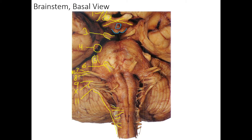Where is cranial nerve twelve? Cranial nerve twelve actually comes out between the pyramids and the olive — and you can see cranial nerve twelve right there. Here we have the pyramids, and lateral to that is the olive. The pyramids, as you remember from your spinal cord tracts lecture, contain the descending upper motor neuron tracts, and you can see them on either side. The olive is important for balance and motor control from the cerebellum, and we'll talk about those later.